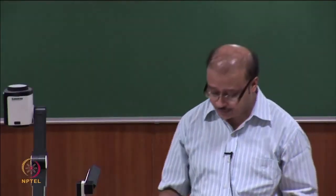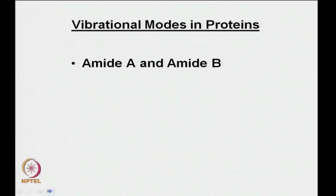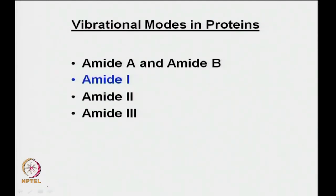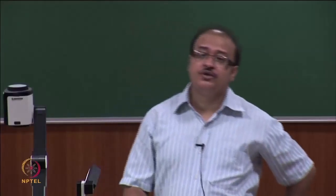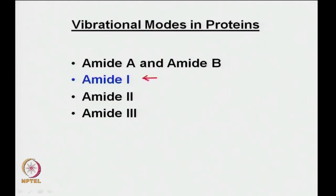Now, what about the vibrational modes in proteins? The significant modes are: amide A and amide B; amide 1 — highlighted because we will be most interested in it; amide 2; and amide 3. The amide 1 mode is the one we will spend the most time on.